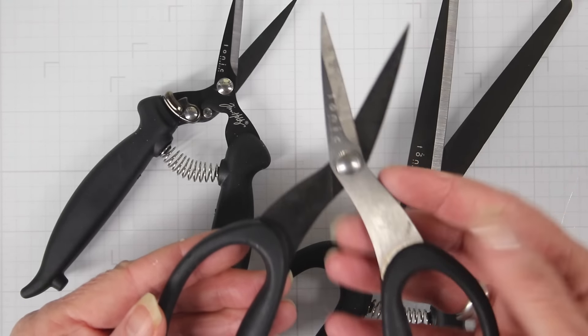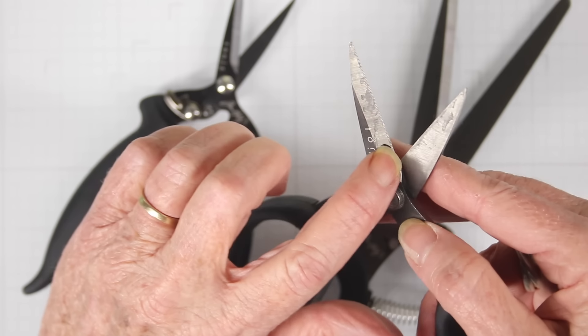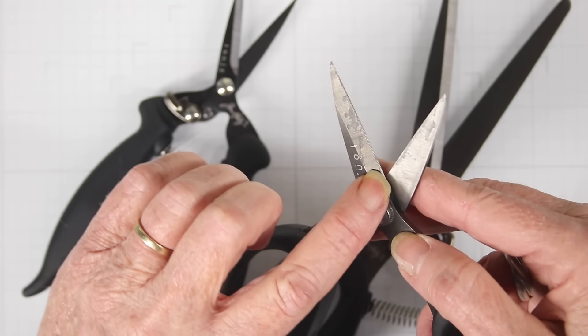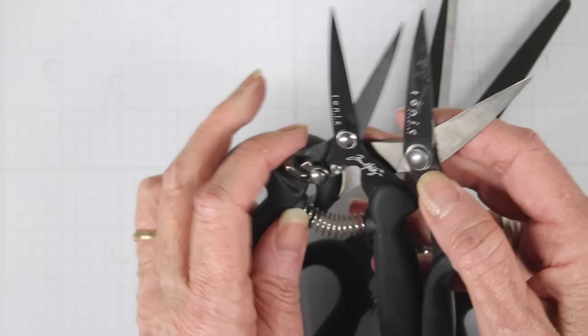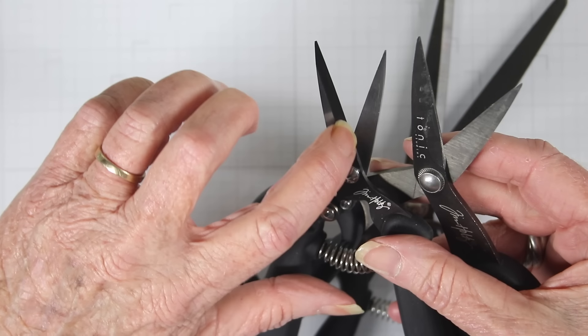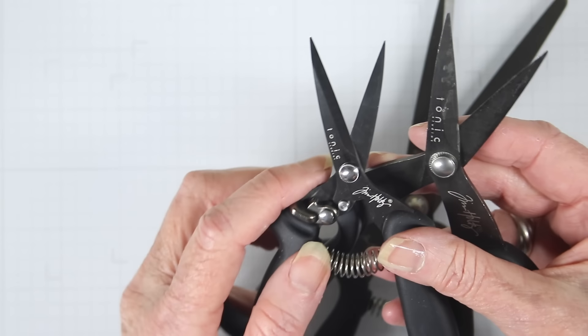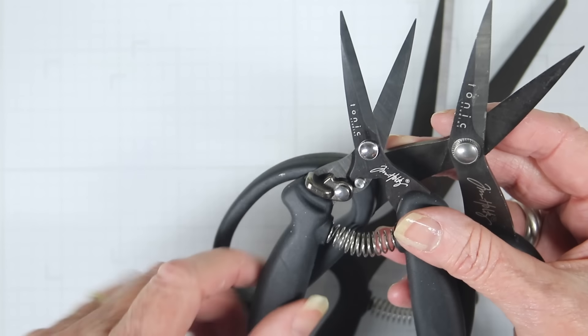If you're wondering how these are different from Tim Holtz's snips in the past, these had a serrating edge where the new snips do not. Your older scissors are more for your crafting with heavy chipboard and even cutting through wire,